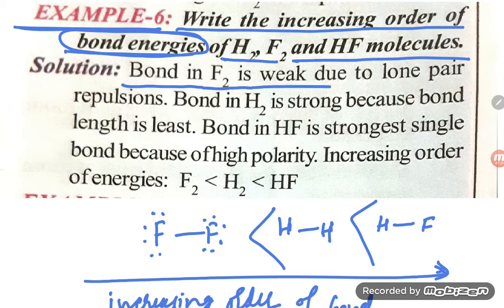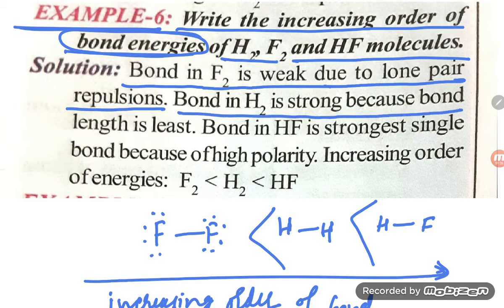Bond in F2 is weak due to the lone pair repulsion. Bond in H2 is strong because the bond length is least.